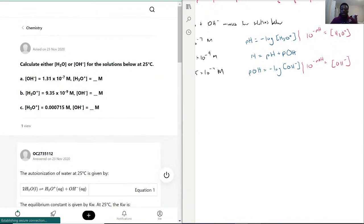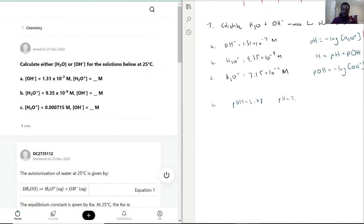Now to find the pH we subtract that from 14. So we have a pH of 7.12 if you round it.